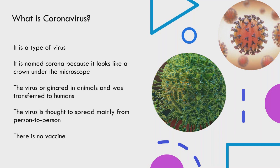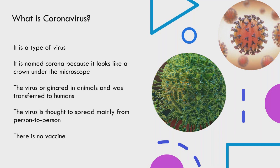This virus originated in animals and was transferred to humans. There's some speculation as to whether it went from bat to pangolin or bat to snake. We do know it was an animal host to human host that caused the viral transmission to mutate to become person to person. The virus is spread person to person, and currently there is no vaccine.